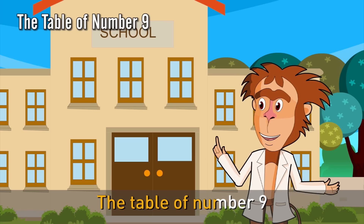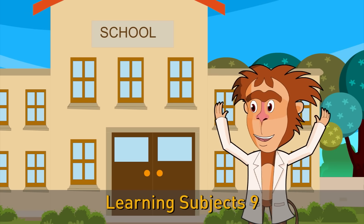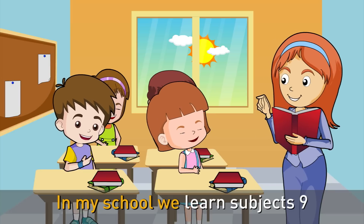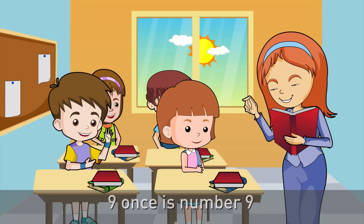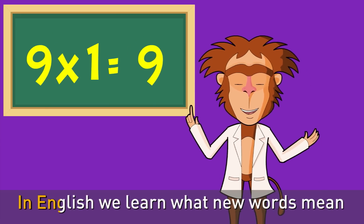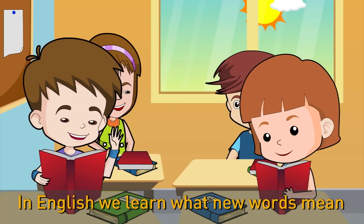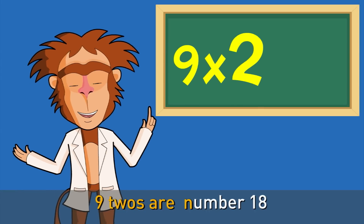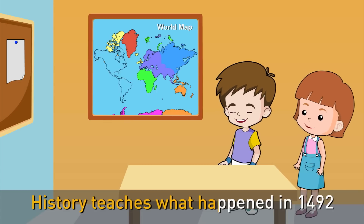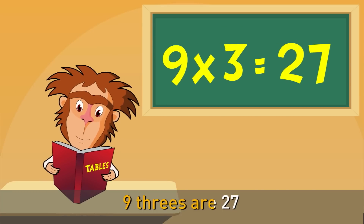The Table of Number 9: Learning Subjects. In my school we learn subjects. 9 once is 9 — in English we learn what new words mean. 9 twos are 18 — History teaches what happened in 1492. 9 threes are 27.